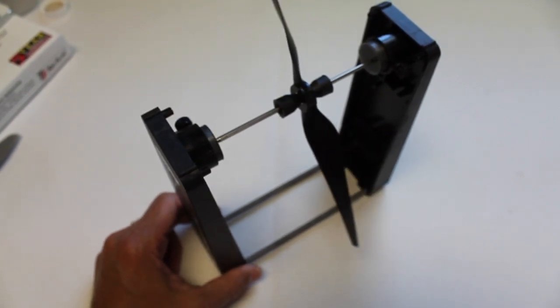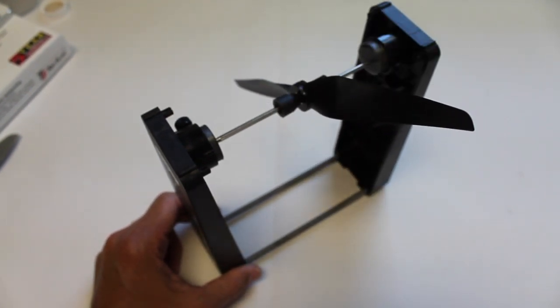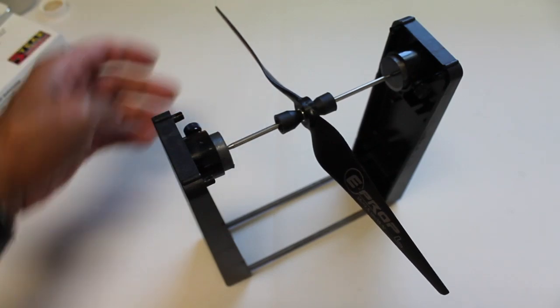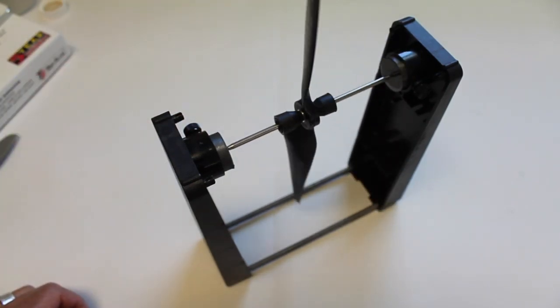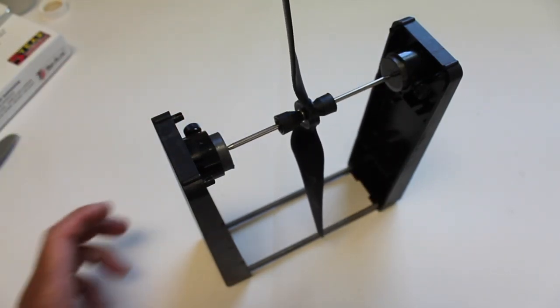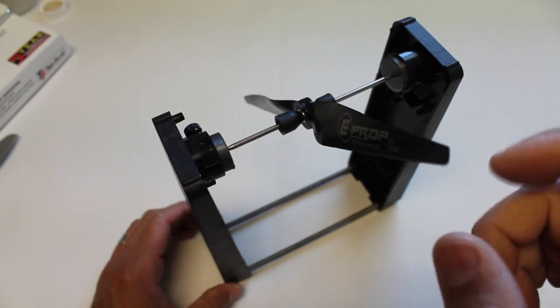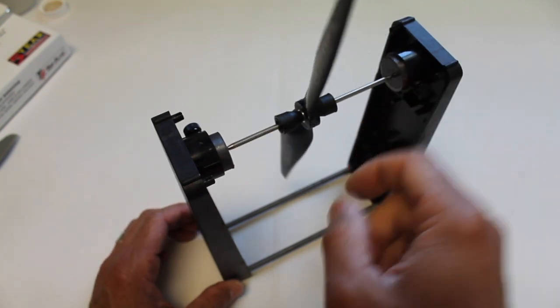Can totally see that this Graupner is way out of balance. That's a pretty telling sign right there that I need to add weight to this side or shave down the other side.